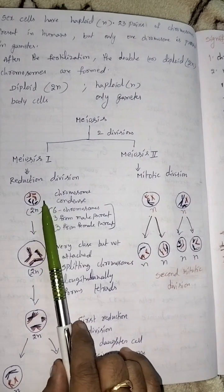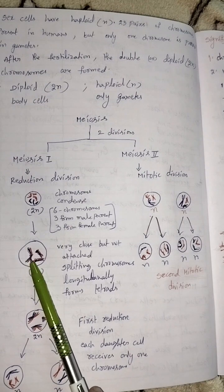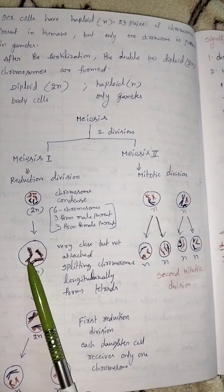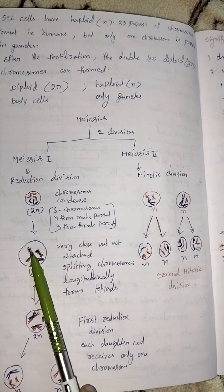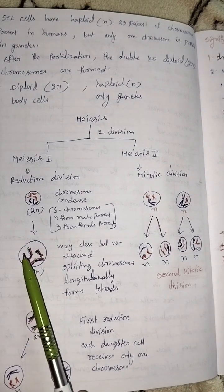Here chromosomes are condensed. After then, very close but not attached, splitting chromosomes longitudinally forms tetrads.